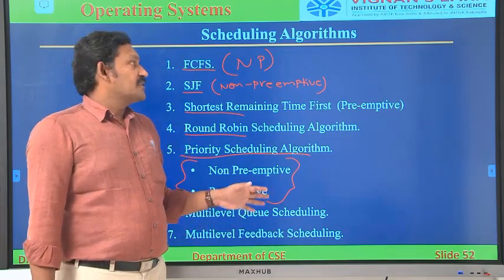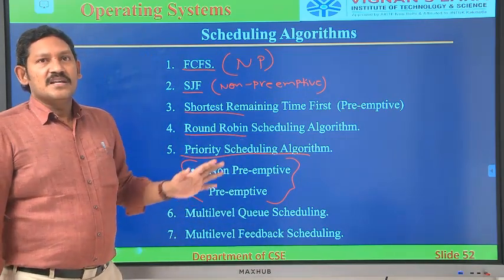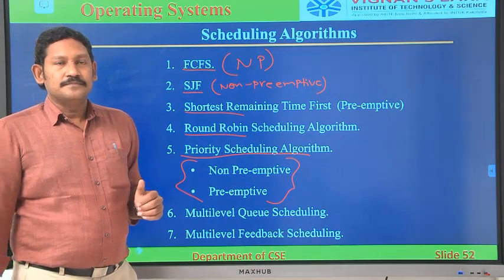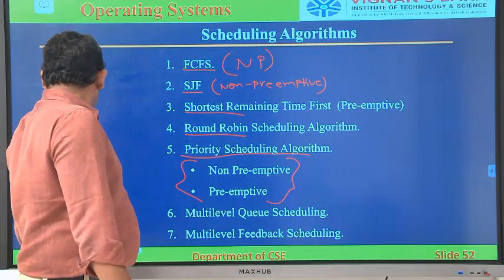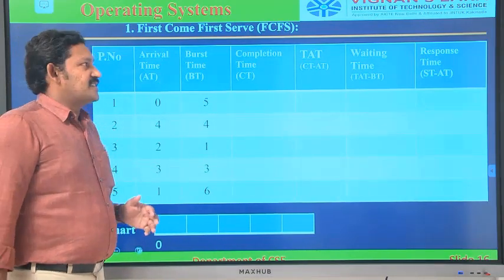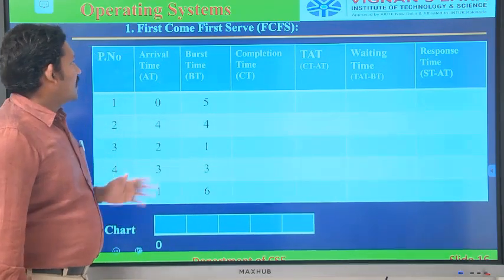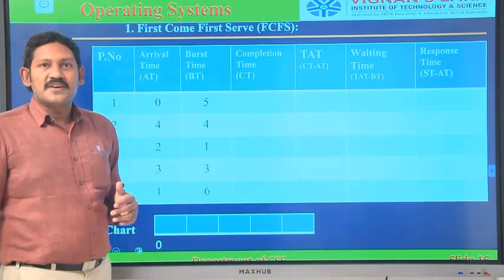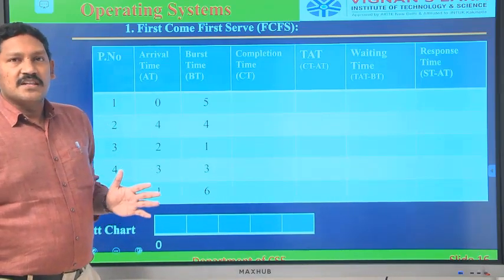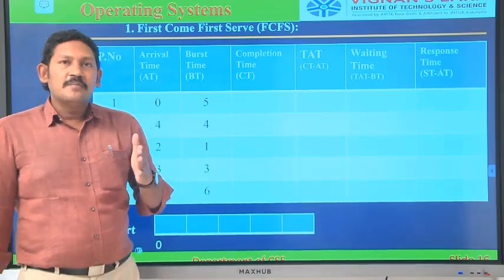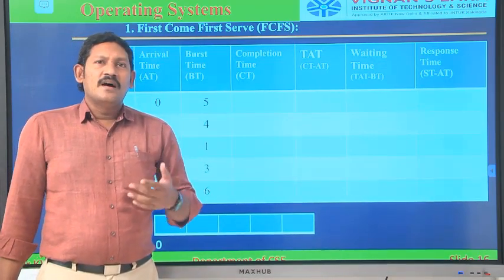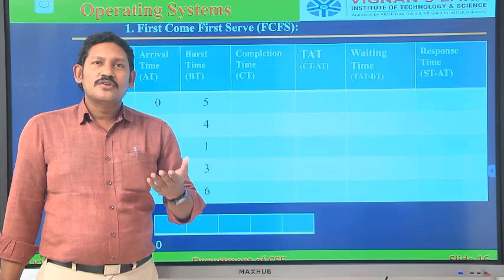Next we have Multi-Level Queue Scheduling and Multi-Level Feedback Scheduling. We will discuss these in detail one by one. So first we will see First Come First Serve. The first problem is First Come First Serve.